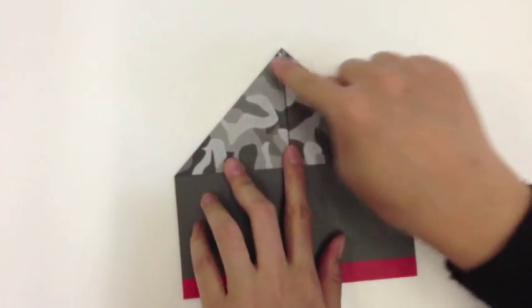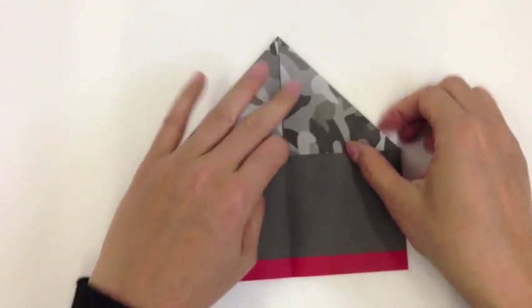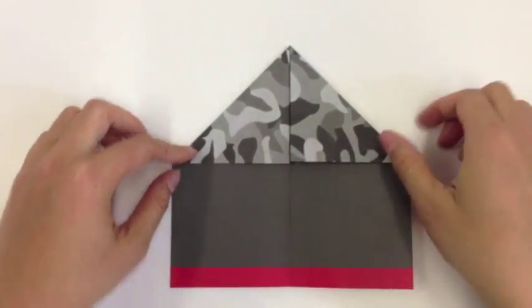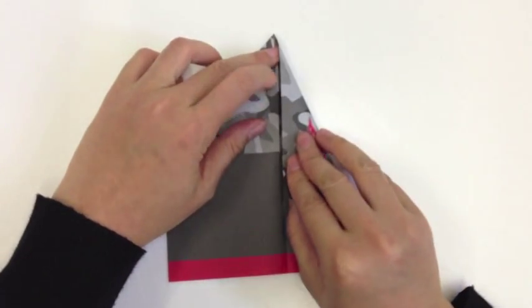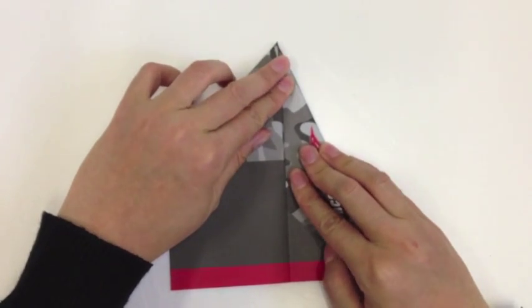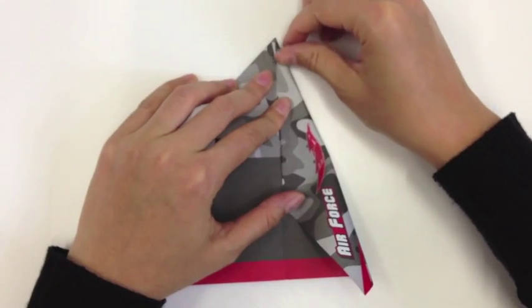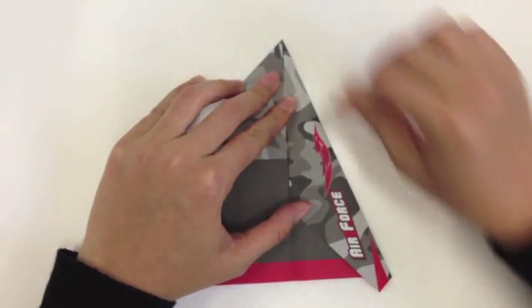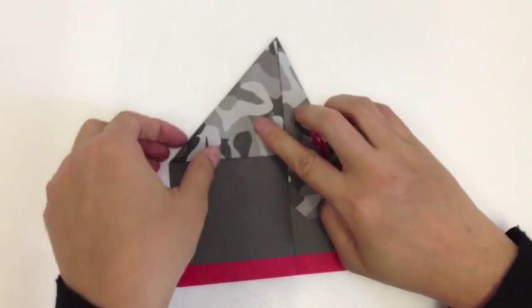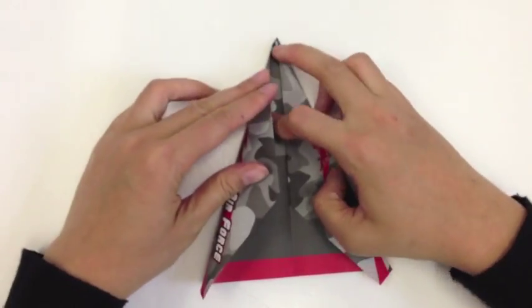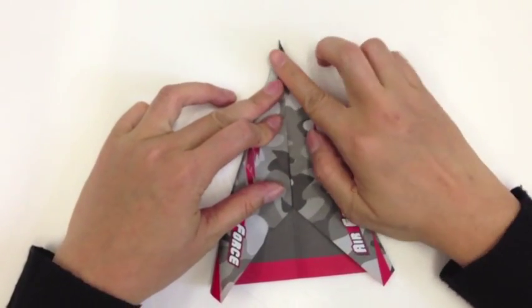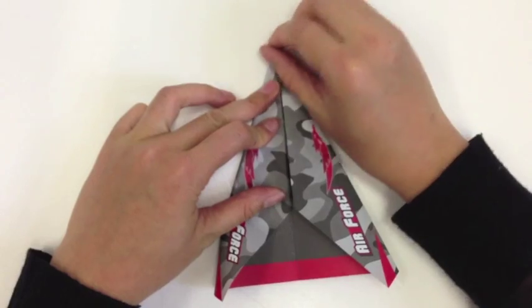Next we're going to take the two outer edges and fold them towards the middle, along the two dotted lines here. So we're going to take the outer edge and fold it inwards, making sure to make a nice point crease it, and then we're going to do this side. So take the outer edge and put it in towards the middle and fold.